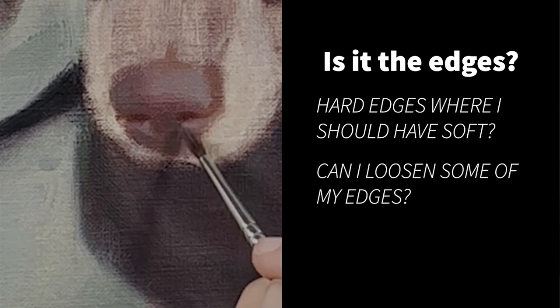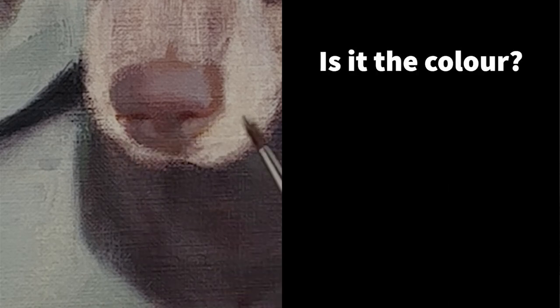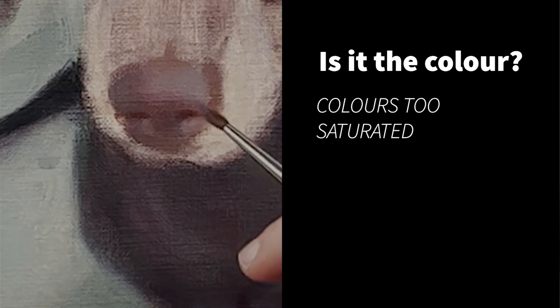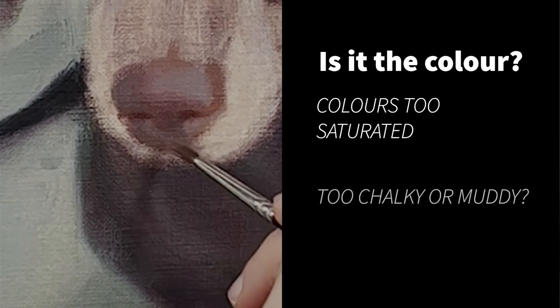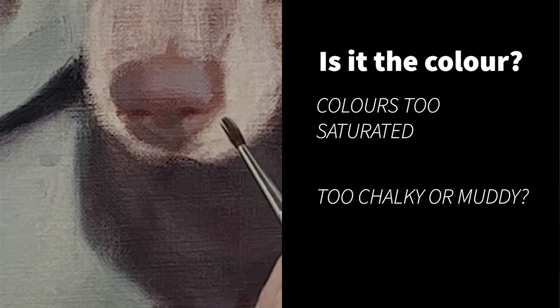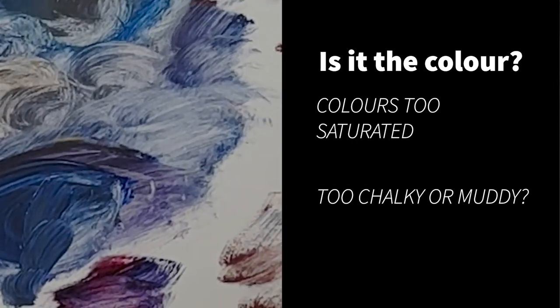If it's not my edges, then I move on to look at my color. So is my color out? Are my colors too saturated? Have my colors gone chalky? That is, I've used too much white paint in my mixing process. Have my colors gone muddy by overmixing colors together?